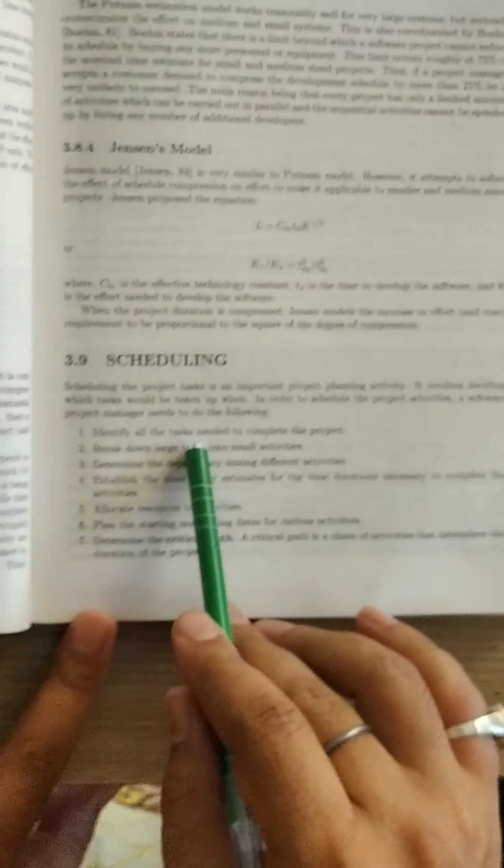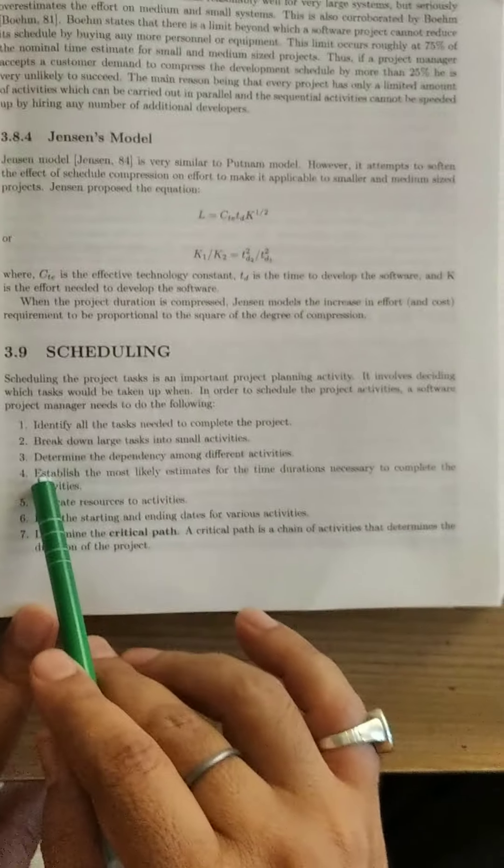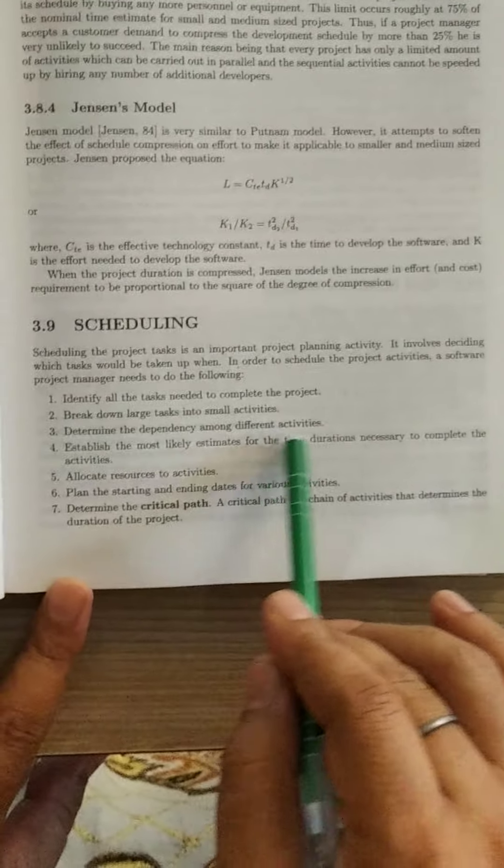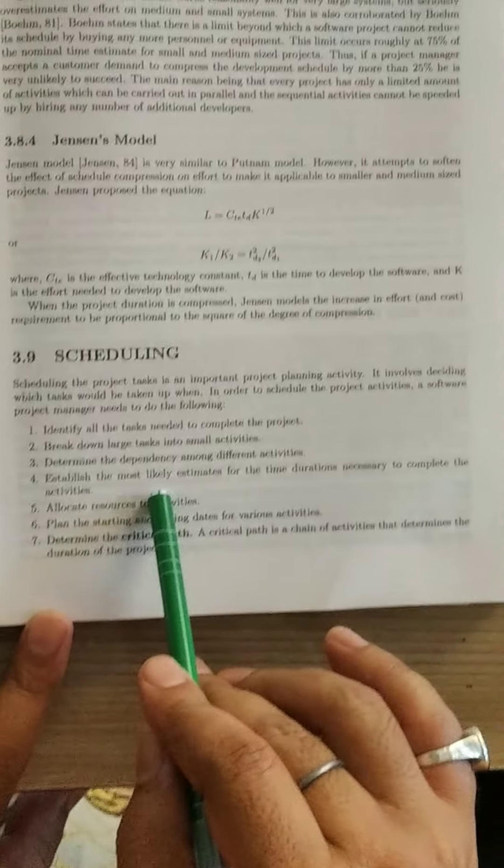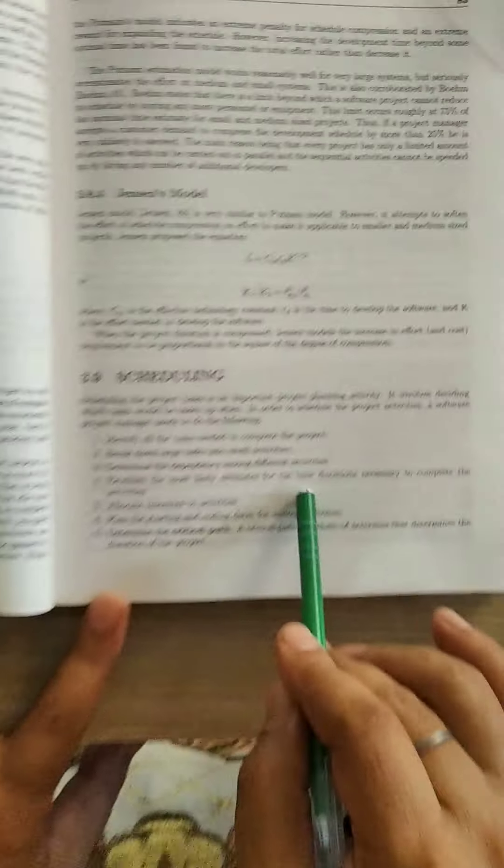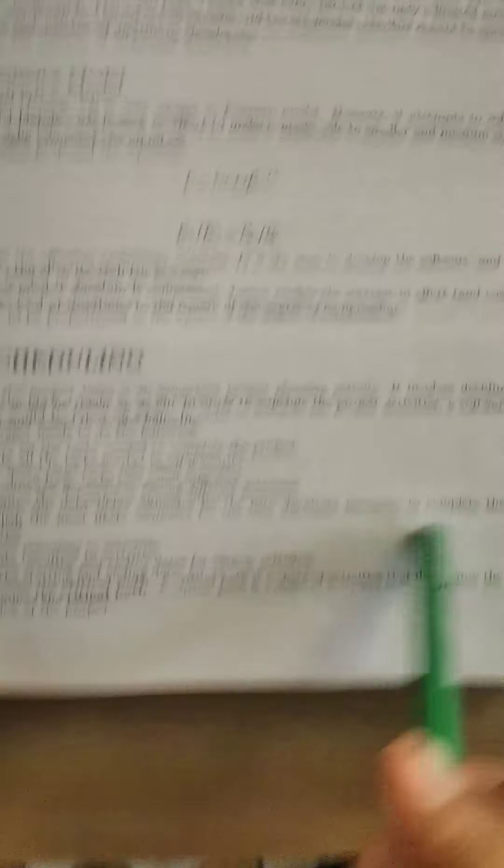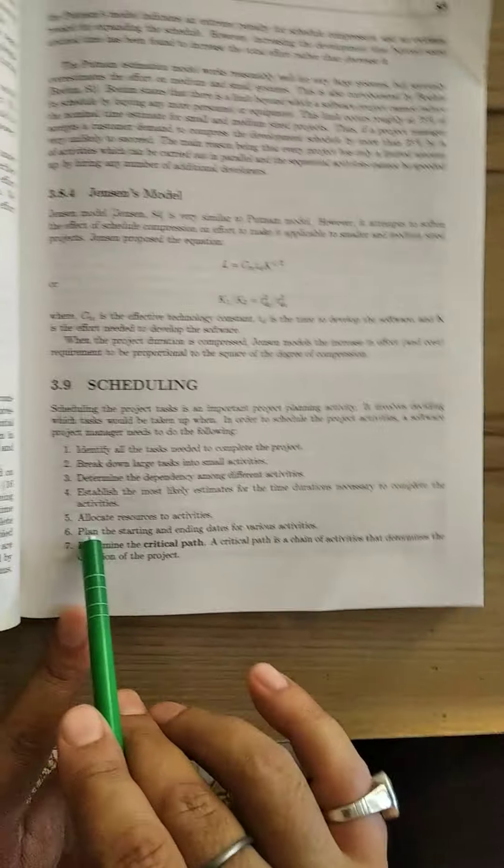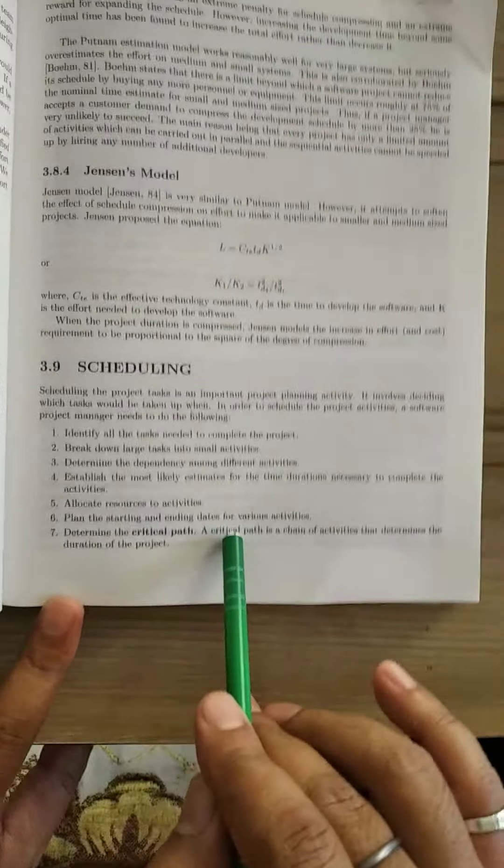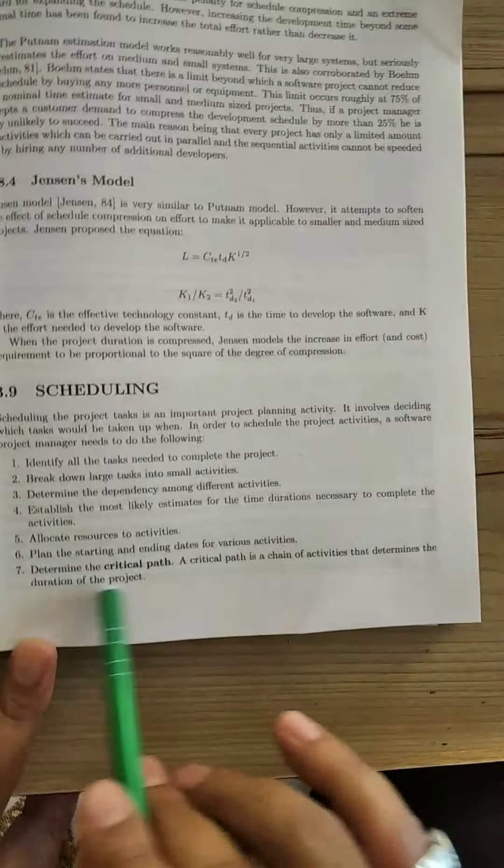Identify all the tasks needed to complete the project, break down large tasks into small activities, determine the dependency among different activities, establish the most likely estimates for the time duration necessary to complete the activities, allocate resources to activities, plan the starting and ending dates for various activities, and determine the critical path.